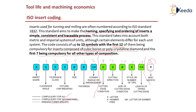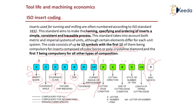The first digit tells you the insert shape — whether it is triangular, rectangular, or square. The second digit is the clearance angle, the third is the tolerance class, and the fourth is the fixture or chip-breaking type. The fifth digit gives the size of the insert, the sixth is the thickness, and the seventh is the corner radius. The eighth digit indicates cutting edge condition — whether dry or wet — and the ninth gives the cutting direction, left-hand or right-hand. The tenth gives the size of the cutting edge condition or feed, and the eleventh gives the style or number of tips. The twelfth digit gives the length of the tipped cutting edge.